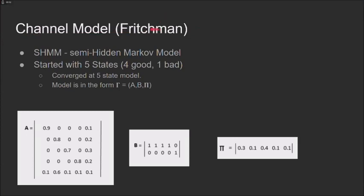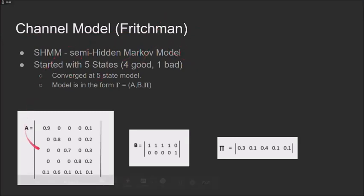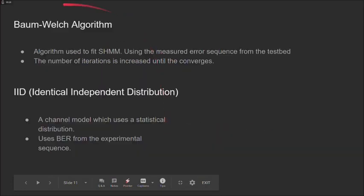We used the Fitchman model. It has five states, four good and one bad. Here are the transition matrices below. We used the Baum-Welch algorithm to calculate our model given an error sequence.